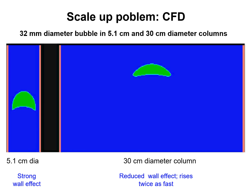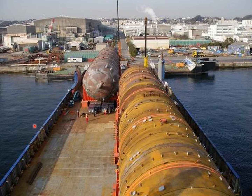A single bubble in a very large diameter column is free from wall effects. These wall effects, or lack thereof, need to be taken into account when scaling up bubble column reactors, because in practice bubble column reactors can have dimensions ranging up to 20 meters in diameter and 40 meters in height, as commonly built in the chemical process industries.